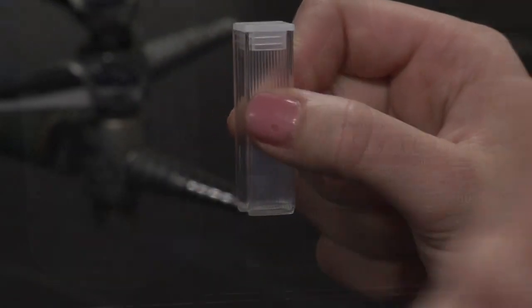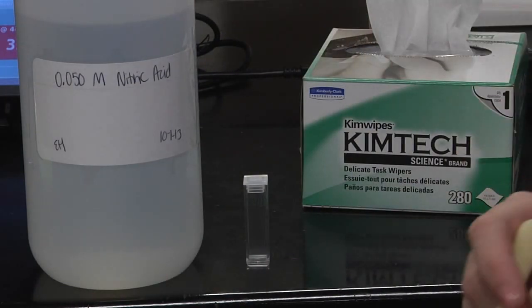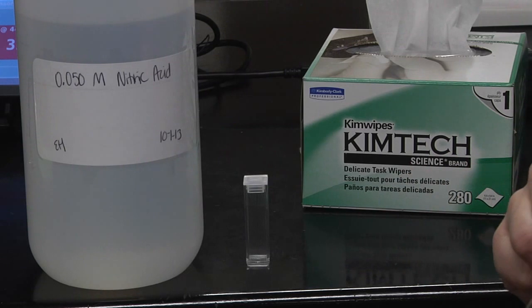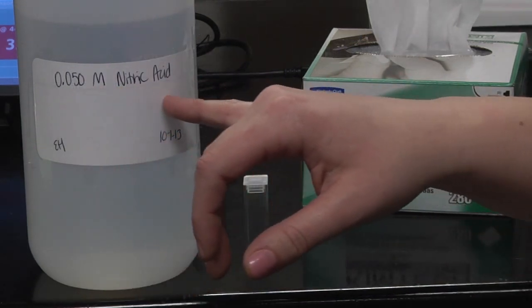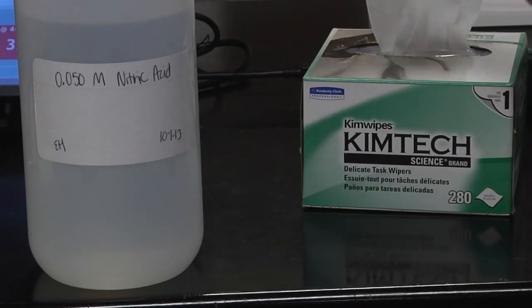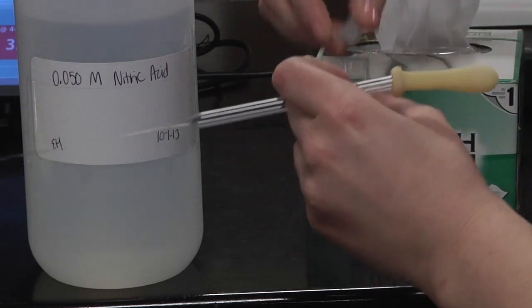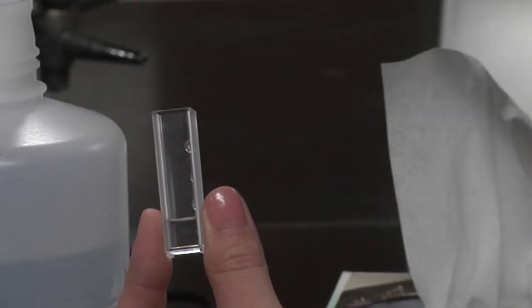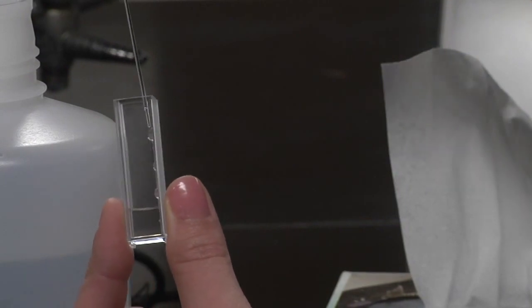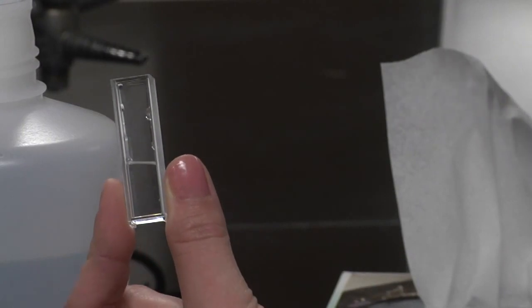Before we calibrate the SpectroVis, we first have to make our blank. To do that, we're going to use 0.05 molar nitric acid and a cuvette. They only need to be about three-fourths of the way full. Also, you want to try and avoid any bubbles. The best way to do that is to pipette it down the side of the cuvette. If you do get a bubble in there, just stab it with the pipette and it'll go away.